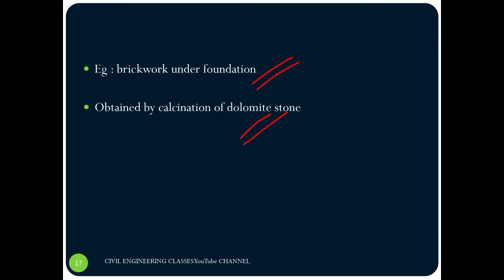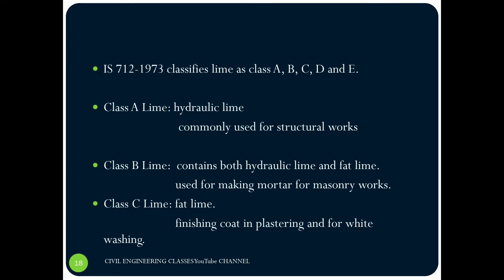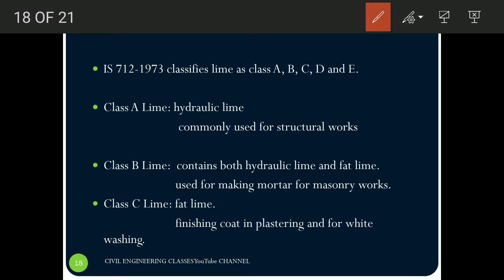This classification was based on purity and application. IS 712:1973 also classifies lime into classes A, B, C, D, and E. Class A lime is basically hydraulic lime, commonly used for structural works. Class B lime contains both hydraulic lime and fat lime, so it is used for making mortar in masonry work — it is a mixture of both hydraulic and fat lime. Class C is only fat lime, used for the finishing coat in plastering and whitewashing.